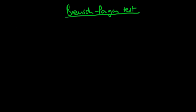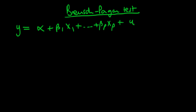So what do we mean by more general forms of heteroskedasticity? Well, the idea is that if we have some sort of population process — y is equal to alpha plus beta_1 x_1 all the way through to beta_p times x_p plus some population error u — then if we had homoskedastic population errors, the variance of u given all of my independent variables, the vector x, should just equal some constant sigma squared.